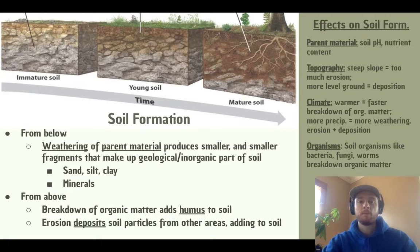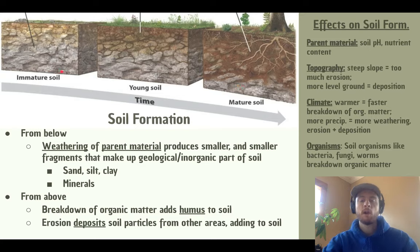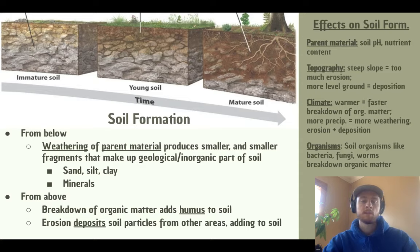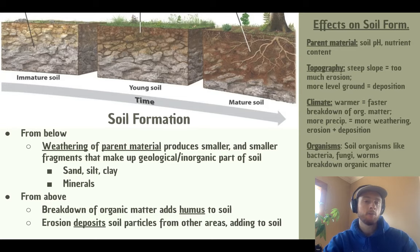Now we'll talk in more depth about soil formation and the factors that affect it. First, we have soil formation from below — the weathering or breakdown of parent material, sometimes called bedrock, which is the rock underlying soil. The breakdown of parent material produces smaller and smaller rock fragments that work their way up and form much of the inorganic or geological part of soil, contributing sand, silt, clay, and minerals. We also have soil formation from above — grass and plants die, and when decomposers break their bodies down, they contribute humus to the soil, adding to its nutrient levels and depth. Weathering and erosion also carry rock fragments and deposit them into the soil.